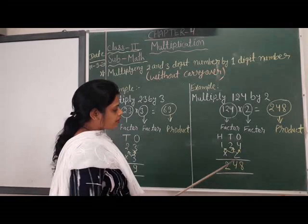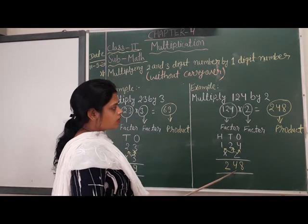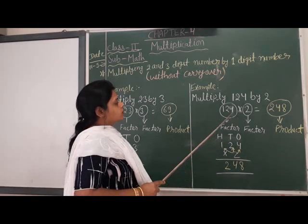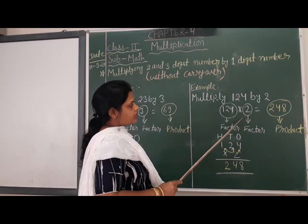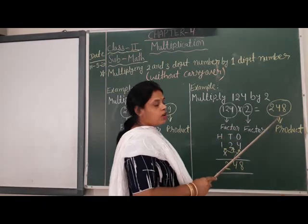This is our product, 248. So there are 2 factors, 124 and 2. When we multiply these 2 factors, our product is 248.